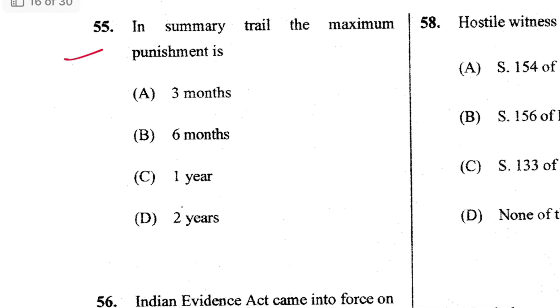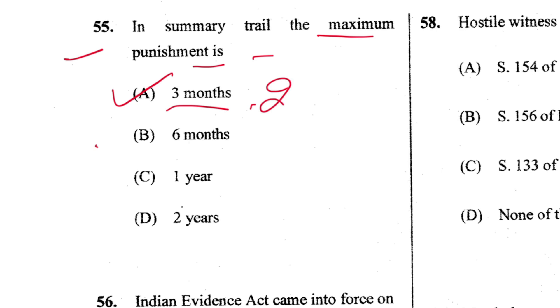Question 55: In a summary trial, the maximum punishment is three months. A is the answer. This is mentioned in Section 262(2) of CrPC.